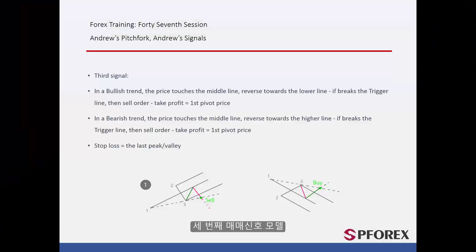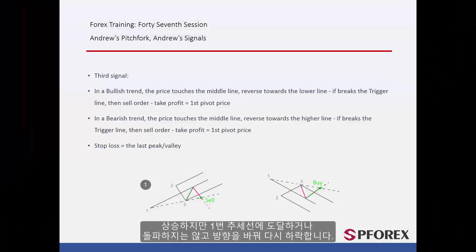Third signal model. In a bullish format, after the price has reached the third pivot, it will increase but it will not cross or touch the first pivot line. So, it will change its direction towards the bottom again.